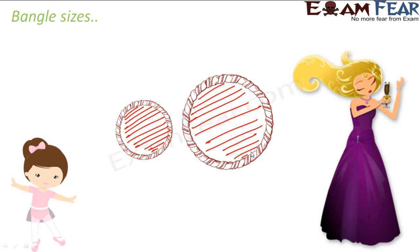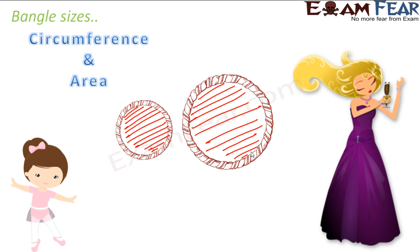When we talk about these bangles, we are basically talking about circles. Bangles remind you of a circle. When you think of a circle, we talk about two things: the area of a circle — that means the total region enclosed within the circle — and the circumference, which is nothing but the total length of the boundary of the circle. These are the two things we are going to discuss in this section.